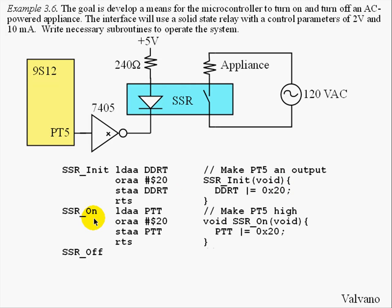To turn the relay on, which will apply power to the appliance, we're going to set bit 5 of port T using the OR operation. If we were writing it in C, it would look like this: PTT OR equals hexadecimal 20, which sets bit 5 and applies power to the appliance.